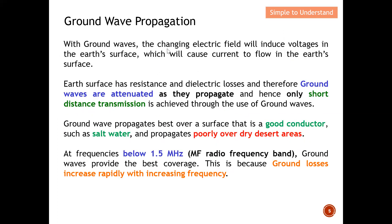With ground wave, the changing electric field induces a voltage in the earth's surface, which causes a current to flow in the earth's surface. This induced voltage and resulting current is how the signal actually begins to propagate.